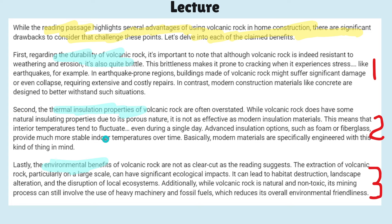And then his third point is about the environmental benefits — he's saying the environmental benefits are not as clear, and it can have impacts on the local ecology and the landscape. So you can see how the lecture has a mirror structure to the reading. It has its main point, which is the opposite of the reading's main point, and then three supporting arguments which directly challenge the three supporting arguments in the reading.